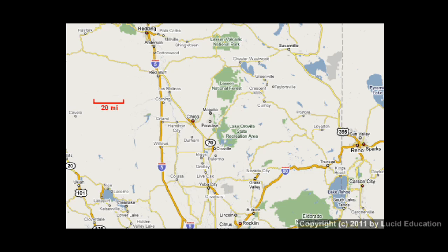In this problem, we're told that an airplane is over Redding, California, which on our map is right up here at the top. We're told that it's traveling south at a speed of 60 miles per hour, and as it's flying south, the wind is blowing to the east at 30 miles per hour.